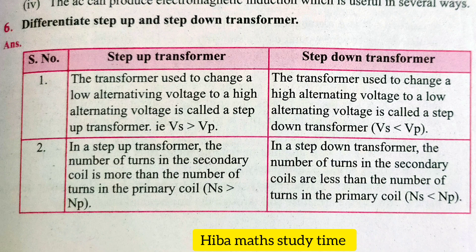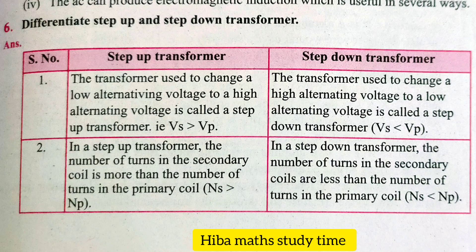In a step-up transformer, the number of turns in the secondary coil is more than the number of turns in the primary coil, so NS is greater than NP. In a step-down transformer, the number of turns in the secondary coil is less than the number of turns in the primary coil, so NP is greater than NS.